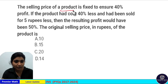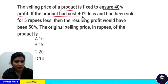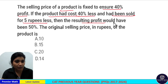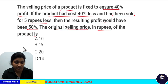The selling price of a product is fixed to ensure 40% is profit. If the product had cost 40% less and had been sold for 5 rupees less, then the resulting profit would have been 50%. Find the original selling price in rupees of the product.